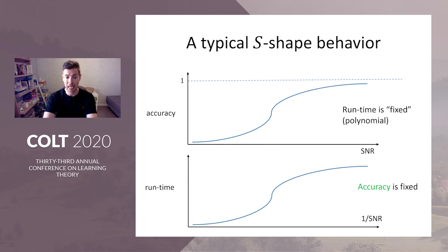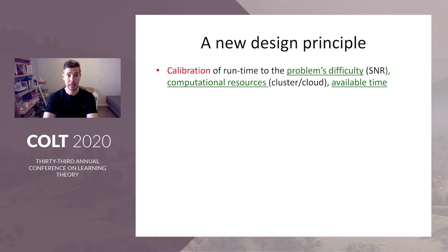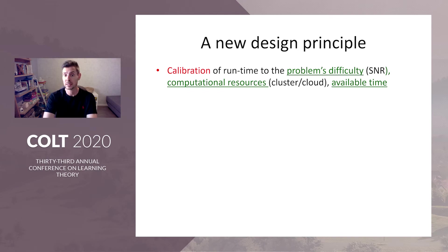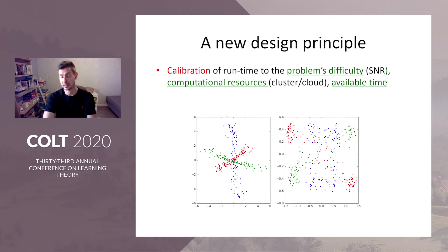We want the algorithm to be able to trade off running time with SNR. So as the SNR decreases, we allow the algorithm to increase the runtime from polynomial to sub-exponential, maybe exponential, to meet the accuracy guarantee. We call this new design principle the calibration principle — it's an any-time algorithm. We want the algorithm to calibrate the runtime to the problem's difficulty: the SNR, the energy in the spike direction, the computational resources available, your cluster, cloud computing, and available time. If we have one month until submission and a fancy cluster, we want an algorithm that can take advantage of all this time and compute power to produce this figure — not a polynomial time algorithm that runs very fast but gives useless results.